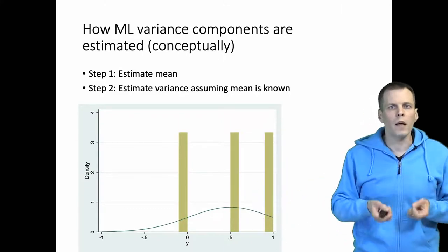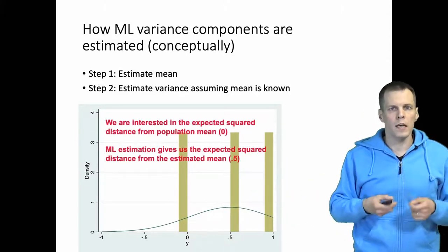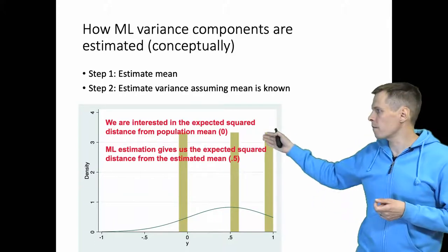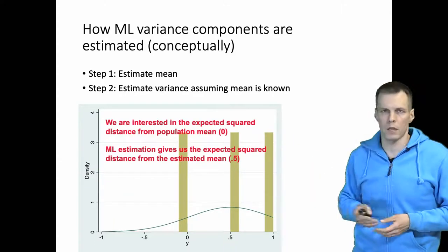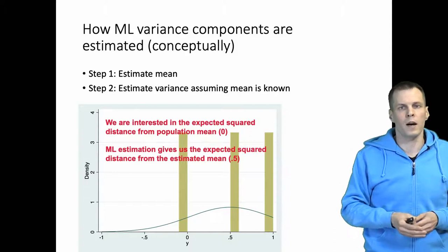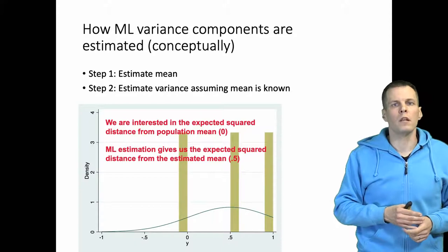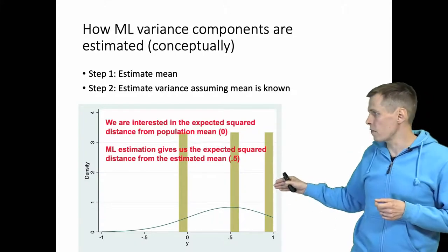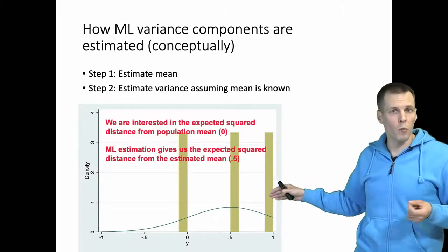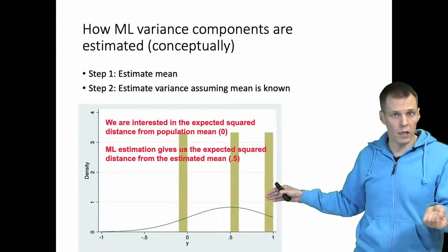What we really would like to know is the expected value of the square differences from the population mean. The expected value of square difference from mean is the definition of variance, and we are interested in knowing how much these observations vary from the population value. So that's the quantity of interest.